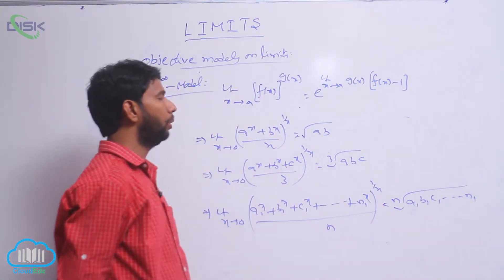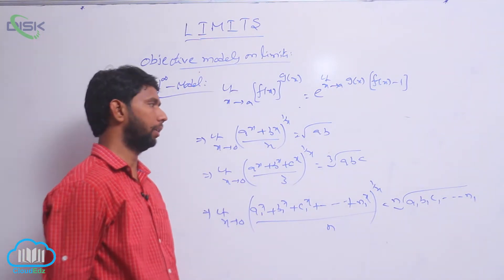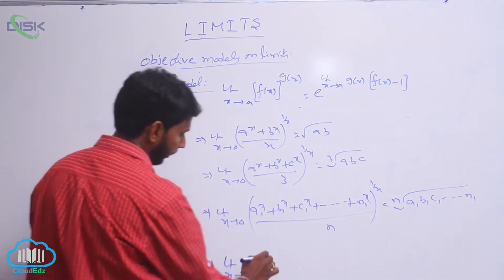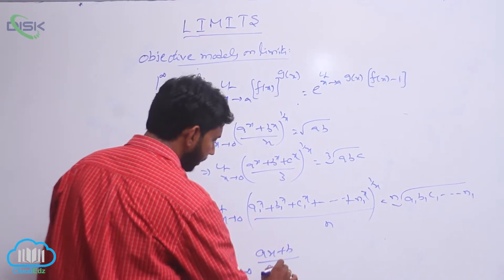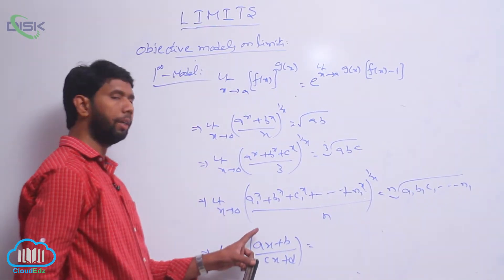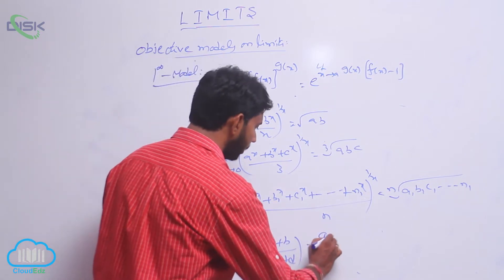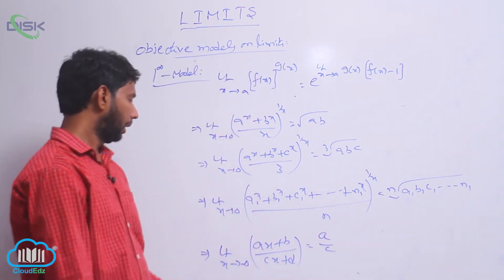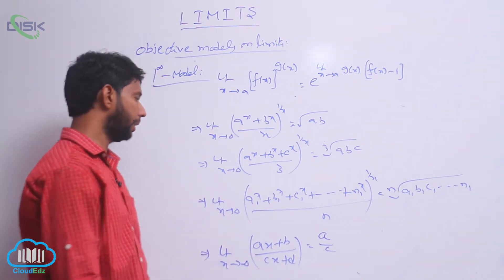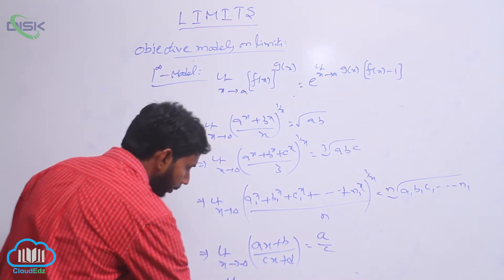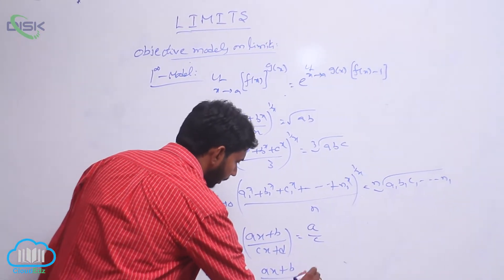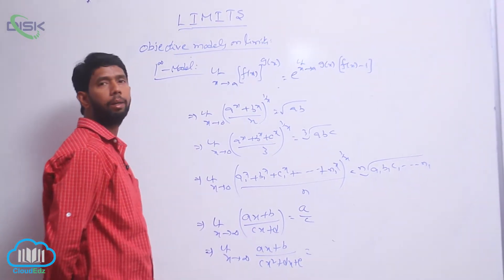Next: limit extends to infinity of (ax + b)/(cx + d). When the degree of the numerator equals the degree of the denominator, the answer is the ratio of the leading coefficients. Here numerator's highest power x has coefficient a, denominator's x has coefficient c, so the answer is a/c.